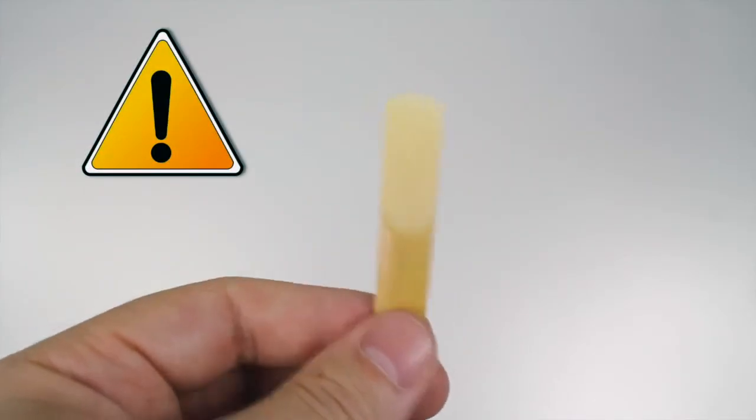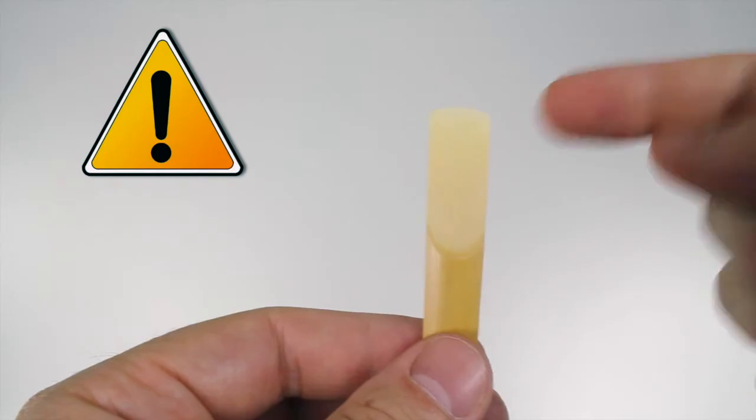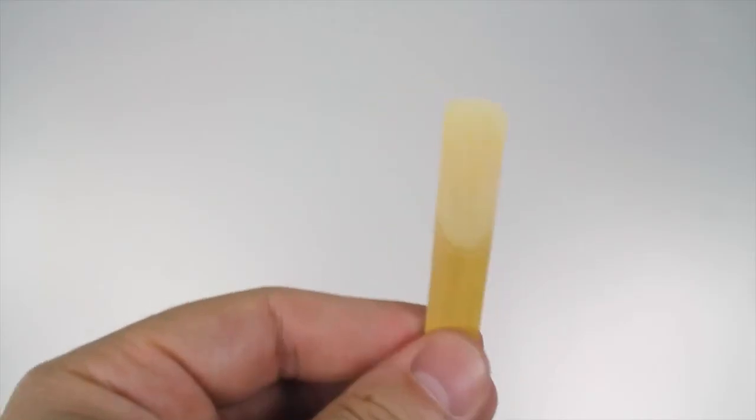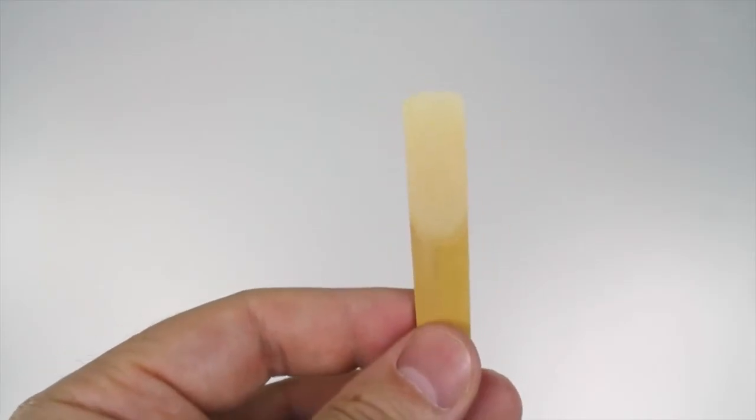You have to be really careful when you're holding your reed because this thin end at the top will chip or break if you accidentally bump it up against something. And when it gets chipped, it won't work anymore.